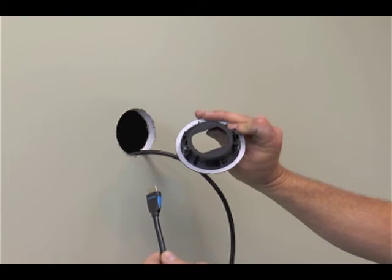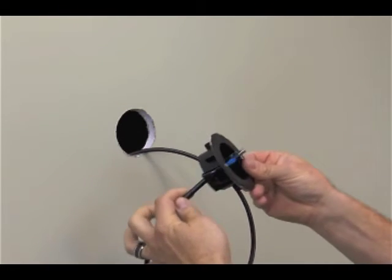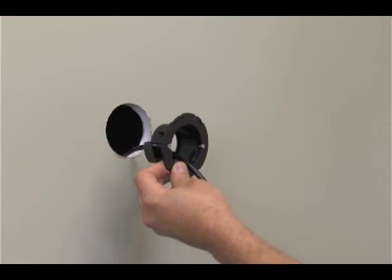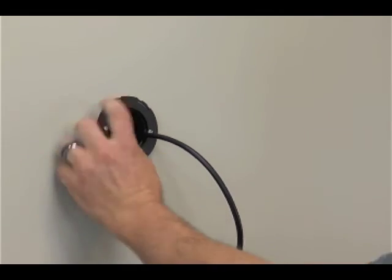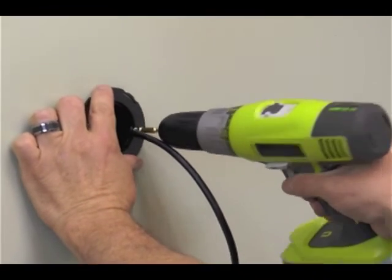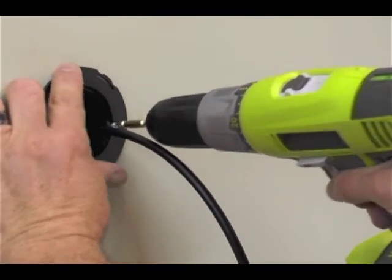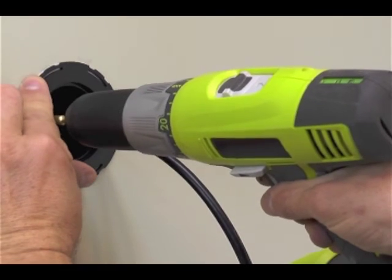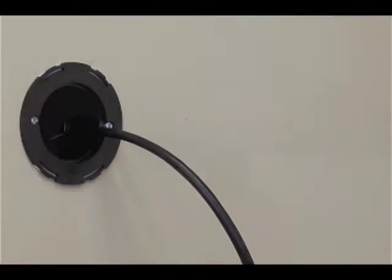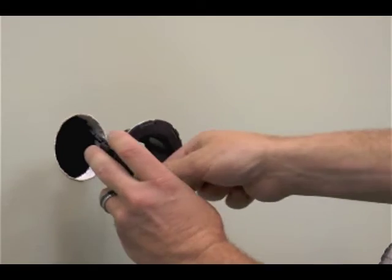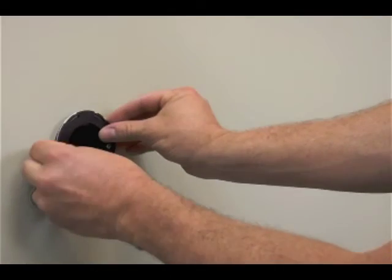Each grommet has two clamps and a gasket to seal against the drywall. Pull the low voltage cord from the back to the front. Insert the grommet into the hole with the screws aligned horizontally from each other. Tighten the screws until they are snug. Be careful not to over tighten the screws. Repeat this process for the other grommet.